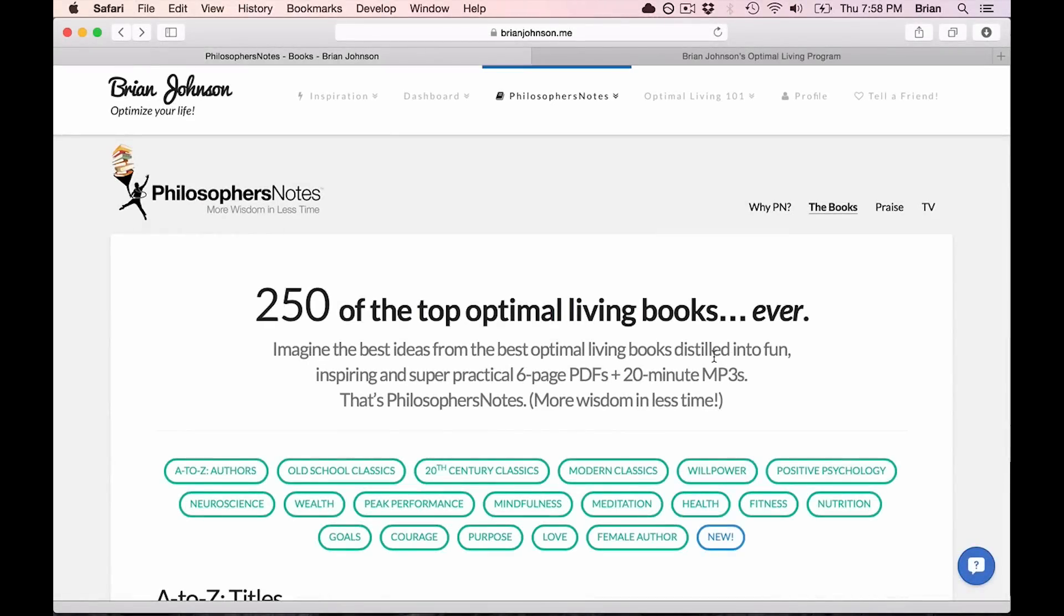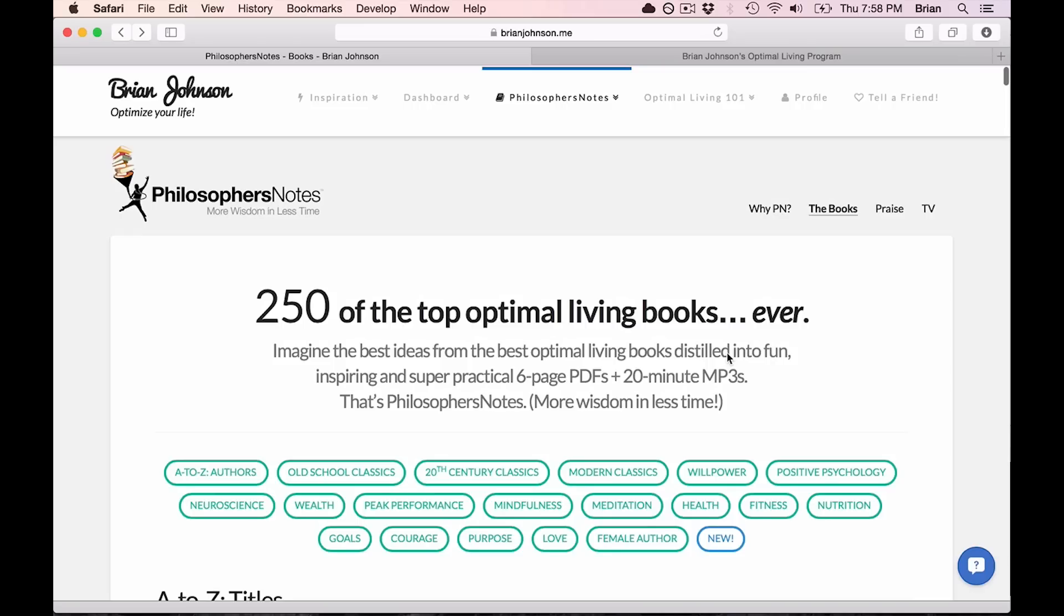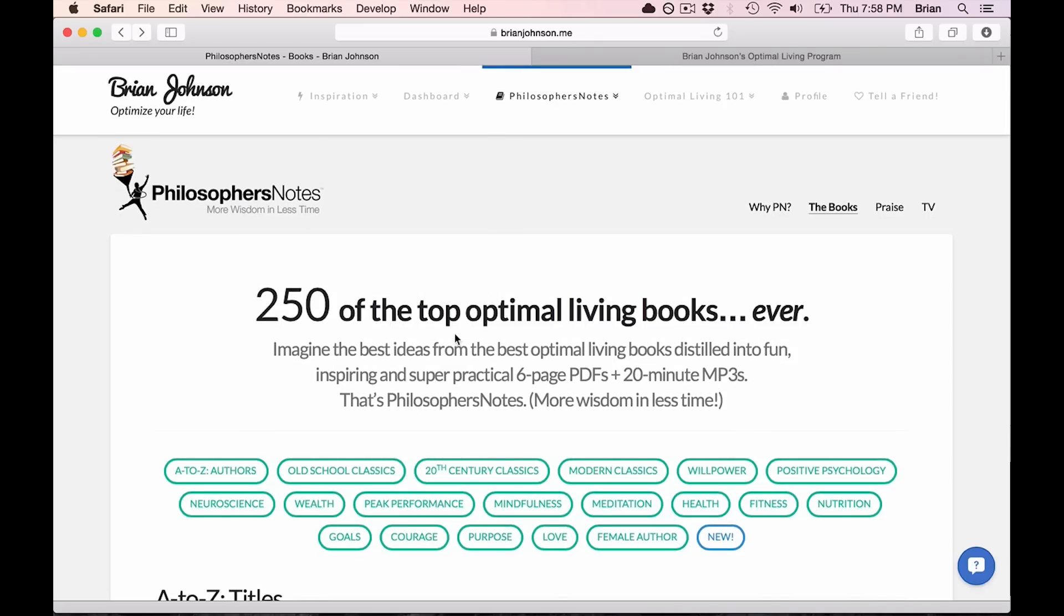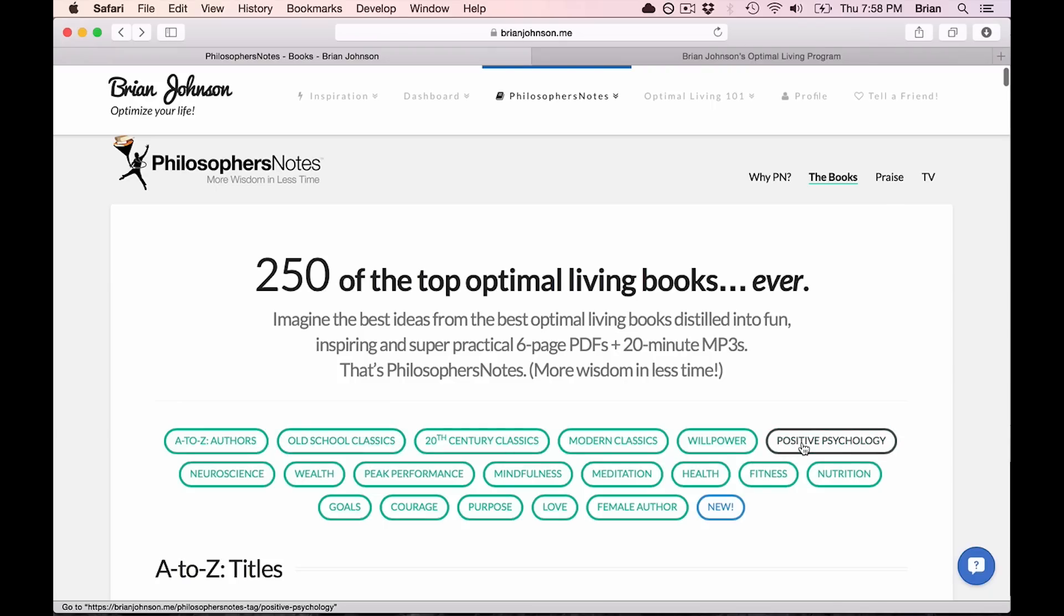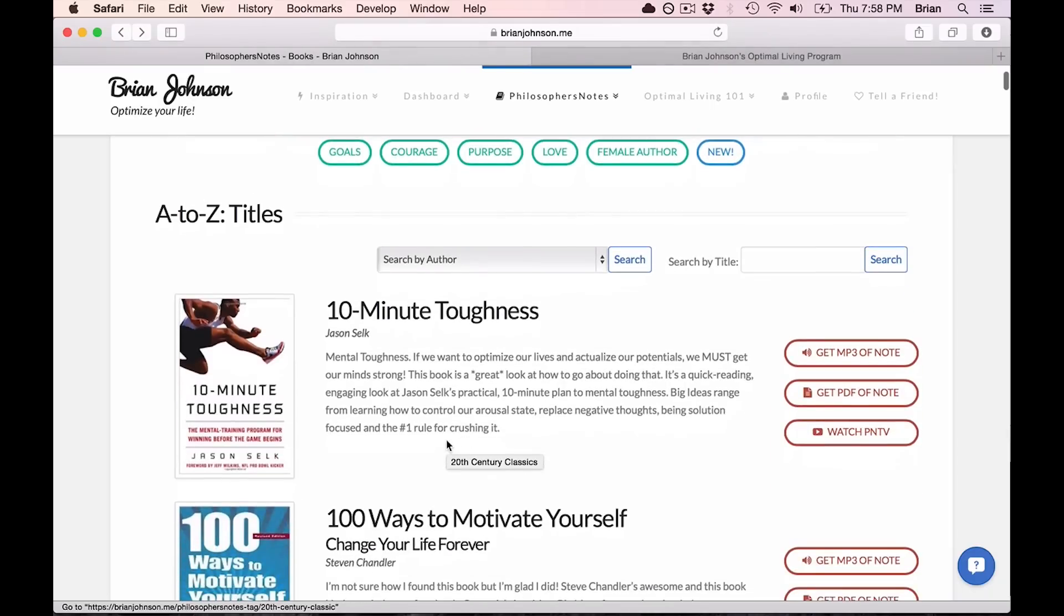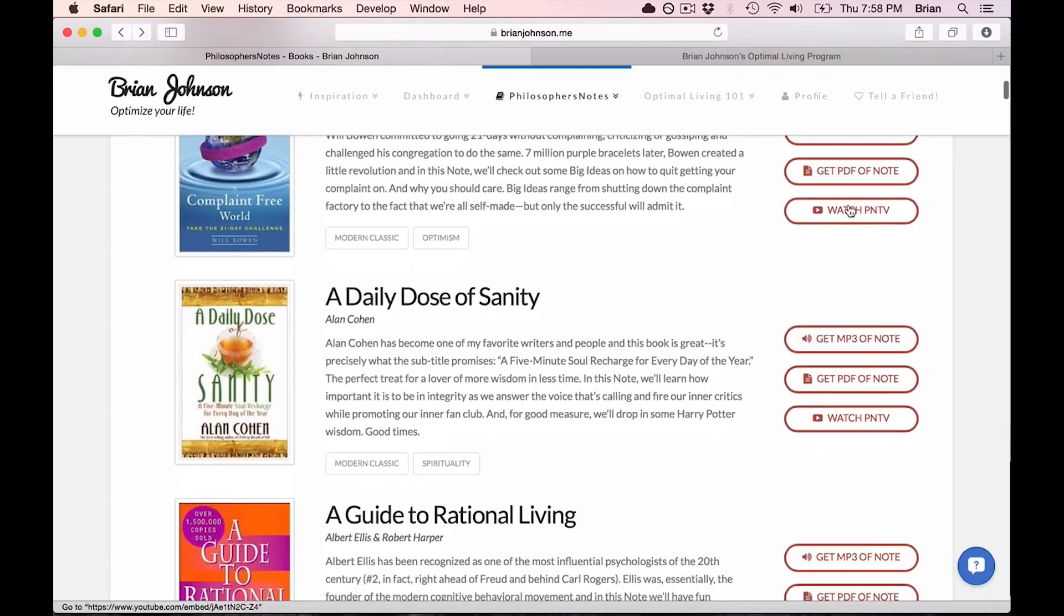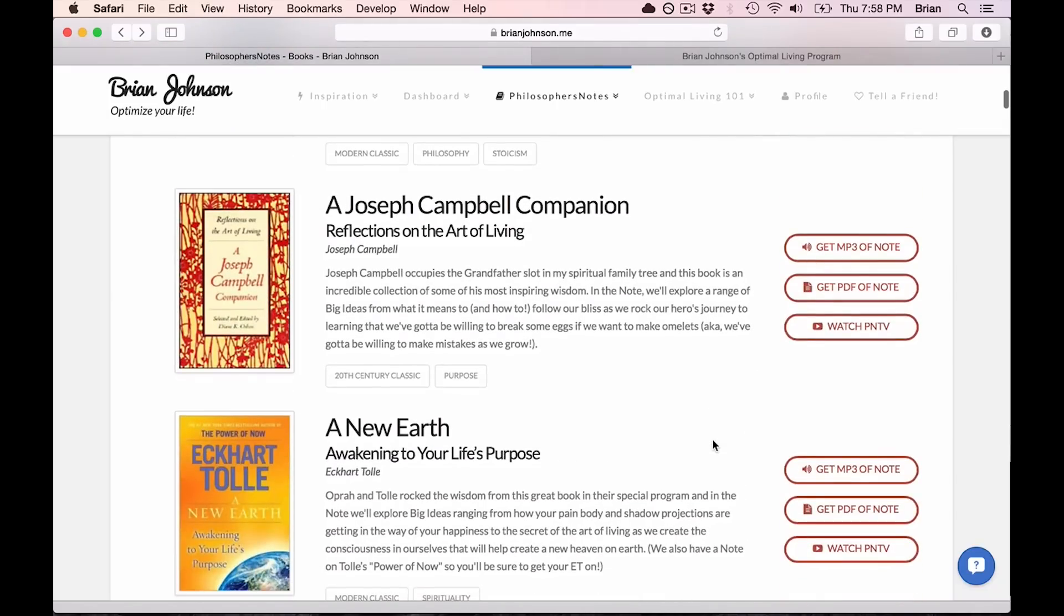Hi, this is Brian. I hope you enjoyed that PNTV episode. A lot of people don't know all the stuff I do beyond these free videos I share on YouTube. So I thought I'd do a quick video to give you an overview of our membership program that you can get access to and get a ton of other stuff. So here's a quick look. $10 a month, join the Optimal Living membership program. You get instant access to 250 philosopher's notes on some of the best Optimal Living books out there. Old school classics, positive psychology, modern stuff, mindfulness, peak performance, purpose, neuroscience, wealth.